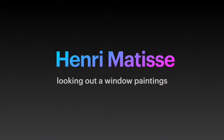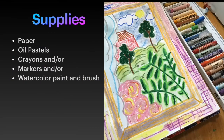Henri Matisse made so many artworks, from his paper cutout shapes to his many paintings, even some stained glass work. There's so much to learn about him. I love to teach about his paintings because he gives us permission, in a way, to just paint what's in front of us and to have fun with color, details, and shapes — don't worry if it's not exact.